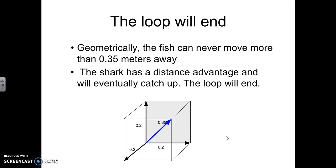The loop will eventually end. Geometrically, the fish can never move more than 0.35 meters away. The shark has a distance advantage and will eventually catch up. And then when the shark catches up, the loop will end. The shark eats the goldfish.